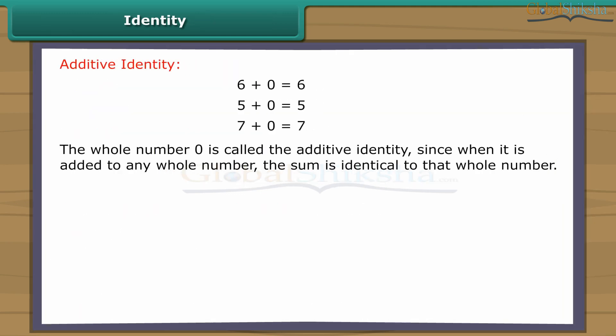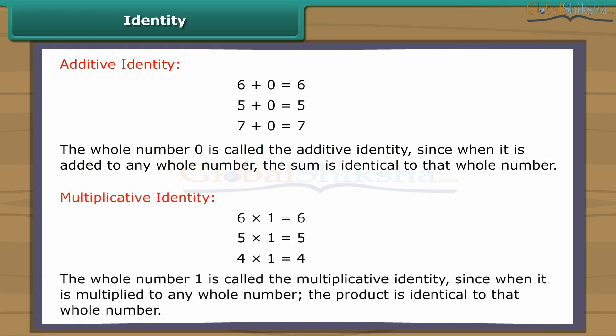Identity. The whole number zero is called the additive identity. Since when it is added to any whole number, the sum is identical to that whole number. The whole number one is called the multiplicative identity. Since when it is multiplied to any whole number, the product is identical to that whole number.